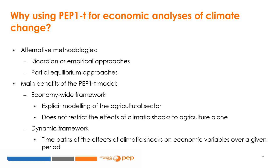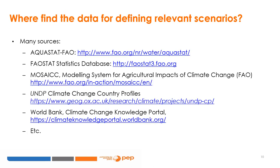This framework allows us to model explicitly the agricultural sector, but does not restrict the effects of shocks to agriculture alone — it captures consequences in the overall economy through the different linkages among prices, income, supply and demand. Another benefit of using the PEP1T model is its dynamic specification, which allows us to generate time paths of the effects of successive climate change-related shocks on economic variables over a given period. A growing number of datasets now provide information about current and future impacts of climate change on the agricultural sector, offering examples to help design relevant scenarios for economic analysis.